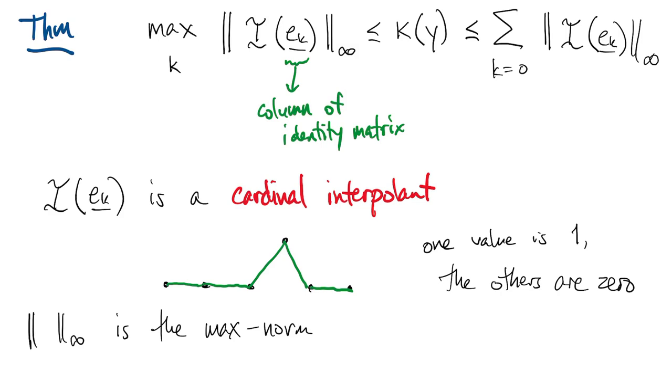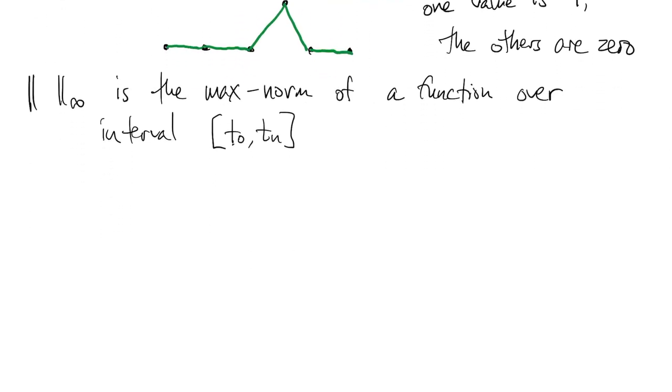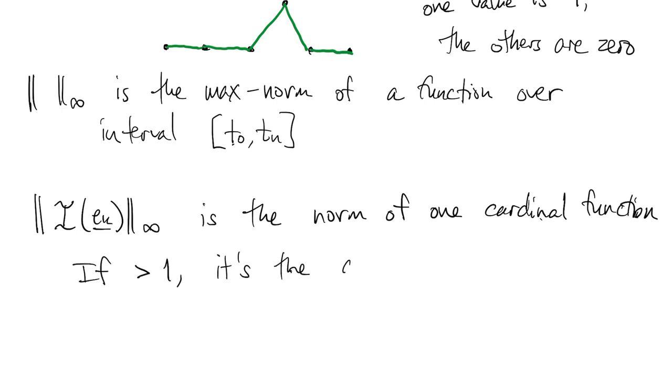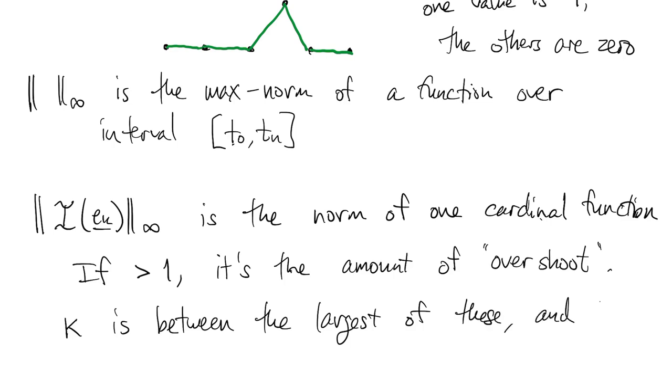What appears in the theorem are the norms of the cardinal functions, where norm is the max norm over the interval from t0 to tn. If one of these cardinal functions is greater than 1, then it measures the amount that the interpolant overshoots the data when it tries to go from 0 to 1. The condition number theorem says that kappa is between the largest of these cardinal function norms and the sum of all of them, regardless of the data.